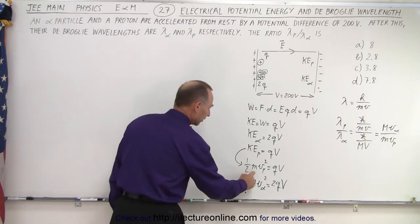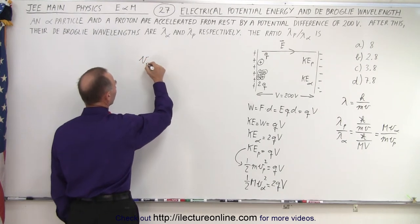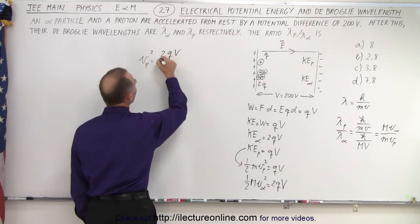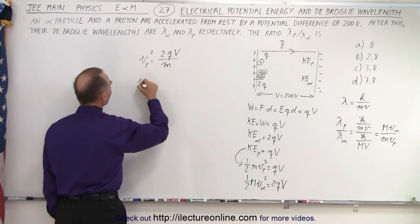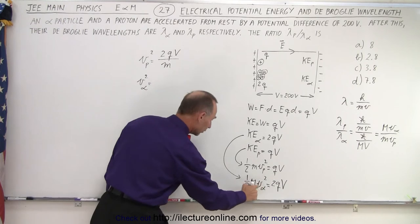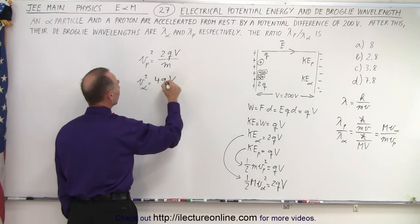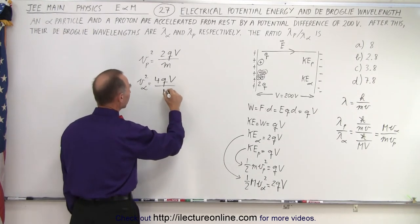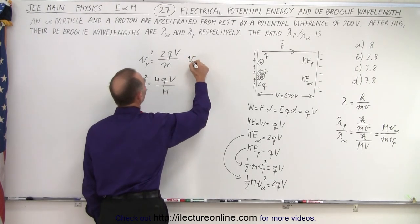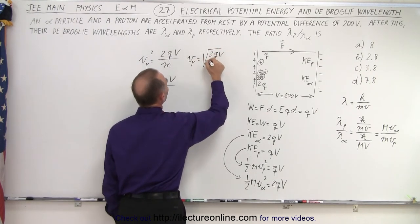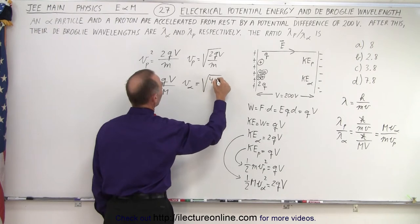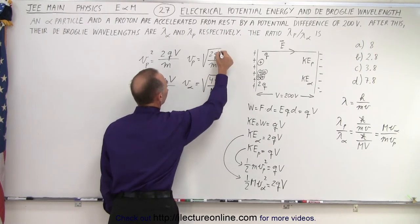Solving for the velocities: the velocity of the proton squared equals 2QV divided by the mass m, so the velocity of the proton equals the square root of 2QV over m. The velocity of the alpha particle squared equals 4QV divided by M, so the velocity of the alpha particle equals the square root of 4QV over M.